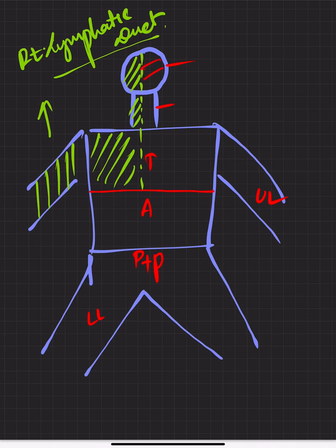The remaining part — the left side of head and neck, left thorax, entire abdomen, and lower limbs — all drain into the thoracic duct. This is the general view of lymphatic drainage of the entire body. Now, what are the tributaries, meaning the trunks draining into these respective ducts?